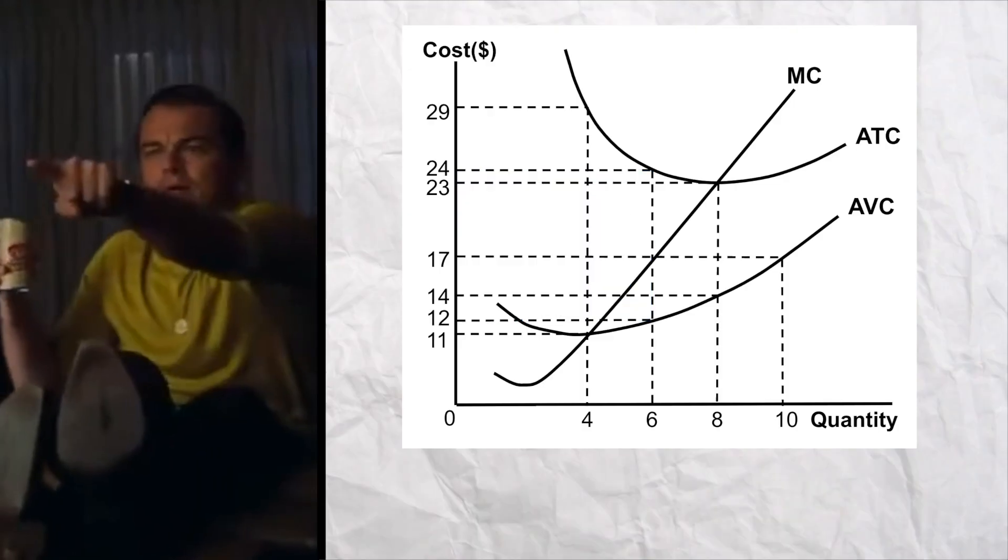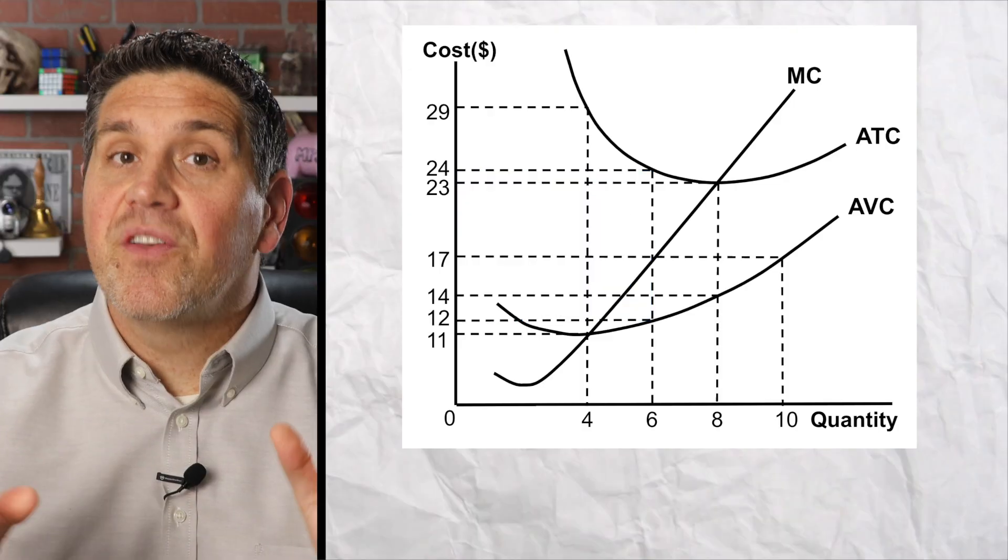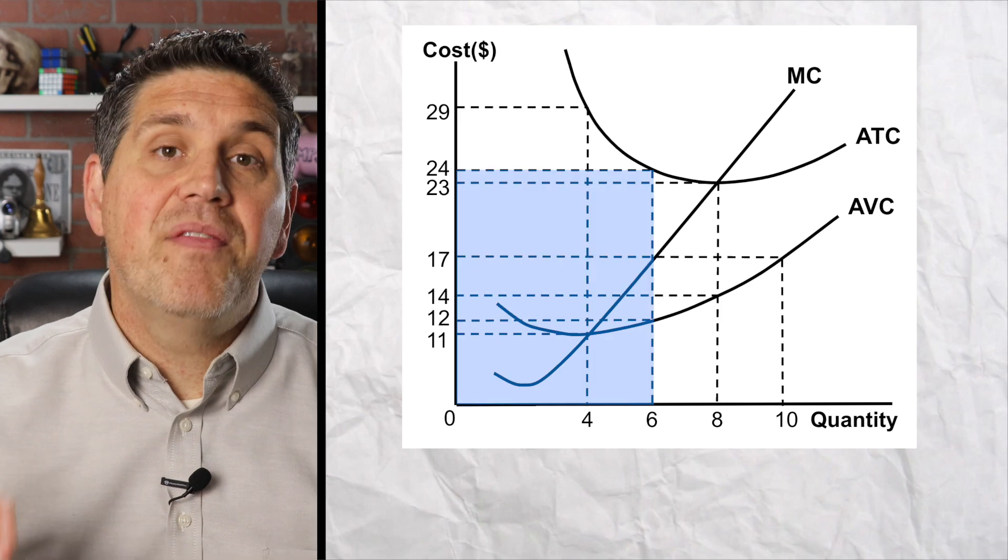Again, the goal here is eventually start seeing the boxes. So at six units, there's a fixed cost, the variable cost, and the total cost.